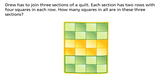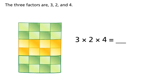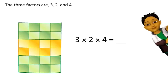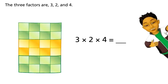Drew has to join three sections of a quilt. Each section has two rows with four squares in each row. How many squares in all are in these three sections? What are the three factors you should use? The three factors are three, two, and four. You can multiply to find the total for an array.